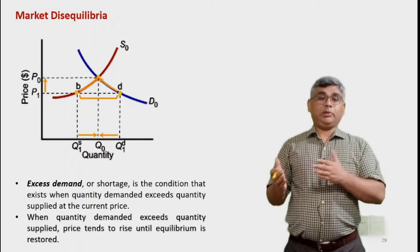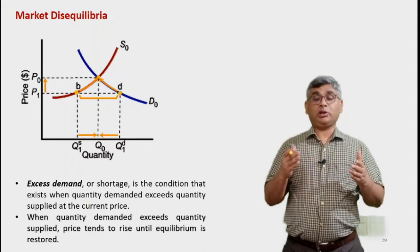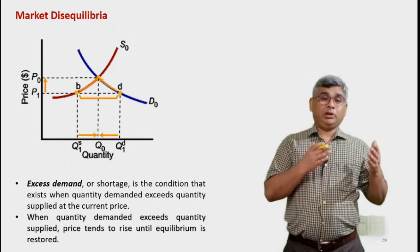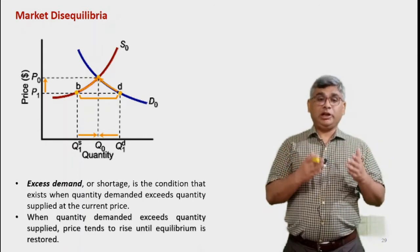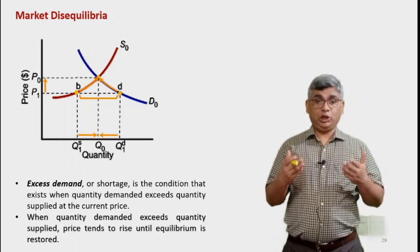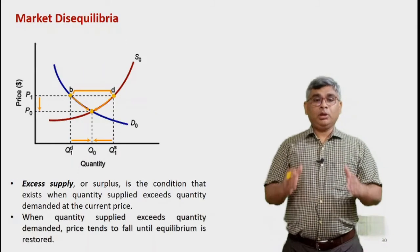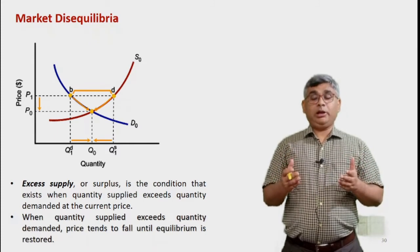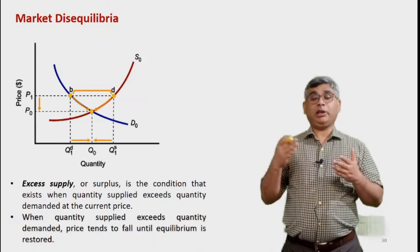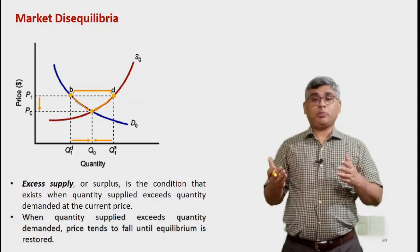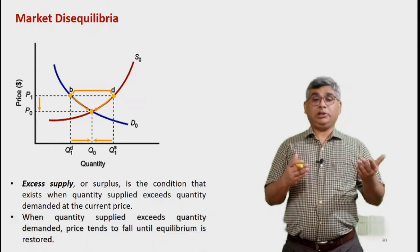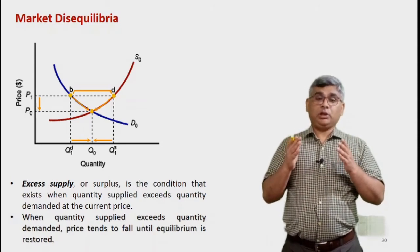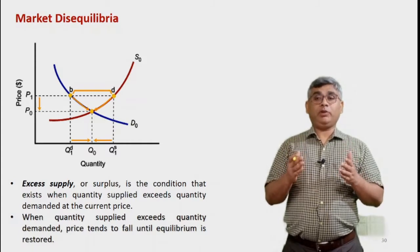When price increases, demand falls — so the initial demand Q1D settles down to Q0. Similarly, suppliers initially supplying Q1S increase output as prices rise, also settling at Q0. Any difference between supply and demand is market disequilibrium, and there is a tendency of the market to restore equilibrium by increasing or decreasing price, with supply and demand adjusting correspondingly.